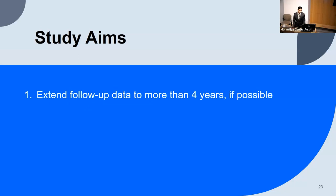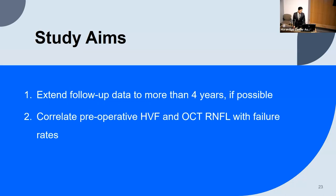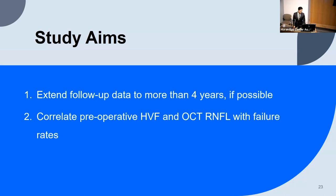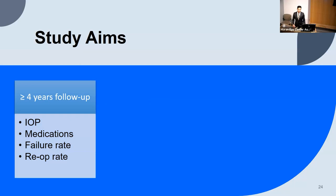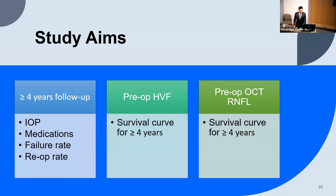This leads to our study aims: first, to extend follow-up data all the way to four years or more. Preliminary data shows patients from 2015–16, so we'll have a good amount of follow-up. We'll correlate success with pre-op Humphrey Visual Field and OCT RNFL. For follow-up, we're looking at intraocular pressure, number of medications, failure rate, and re-operation rates. We'll generate survival curves for both pre-op visual field and RNFL over at least four years. This is an IRB-approved retrospective review from the first GAT procedure at Moran — around 2012 — through the present.